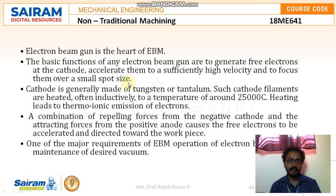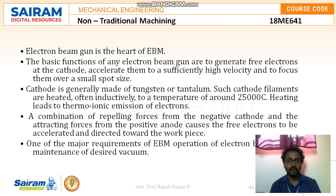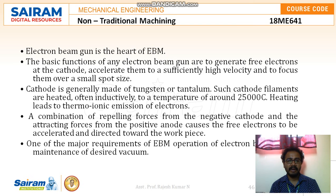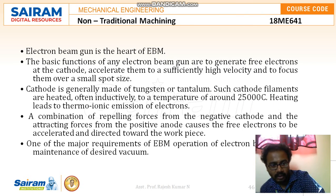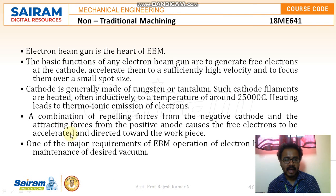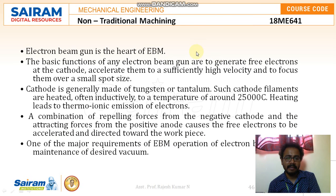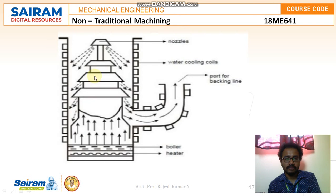The electron beam gun is the heart of the electron beam machining process. Its basic functions are to generate free electrons at the cathode, accelerate them to a sufficiently high velocity, and focus them onto a small spot size. The cathode is generally made of tungsten or tantalum. Such cathode filaments are heated — often inductively — to a temperature of around 2500 degrees Celsius, leading to thermionic emission of electrons. A combination of repelling forces from the negative cathode and attracting forces from the positive anode causes the free electrons to accelerate toward the workpiece. One of the major requirements of the electron beam gun is the maintenance of the desired vacuum.